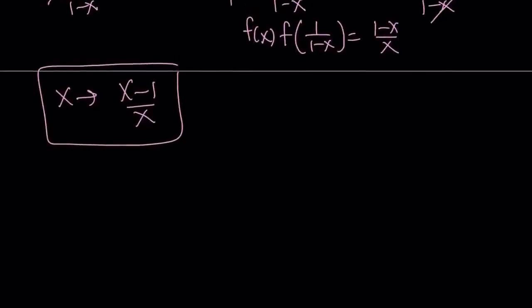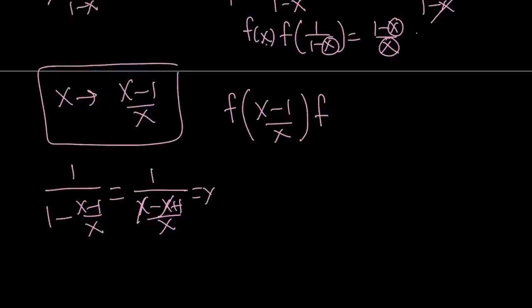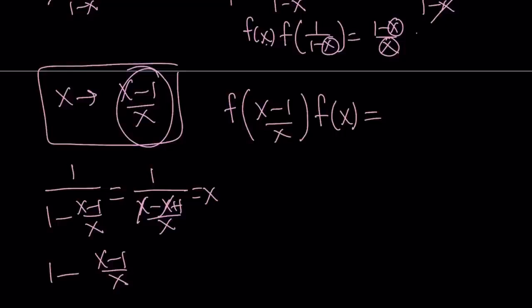We're going to replace x with x minus 1 over x. So f of x is easy — it becomes f of x minus 1 over x. For 1 over 1 minus x, replacing x with x minus 1 over x and making a common denominator gives x minus x plus 1 over x. The x cancels out, giving 1 over 1 over x, which is x. So this one gave us f of x, which is cool.